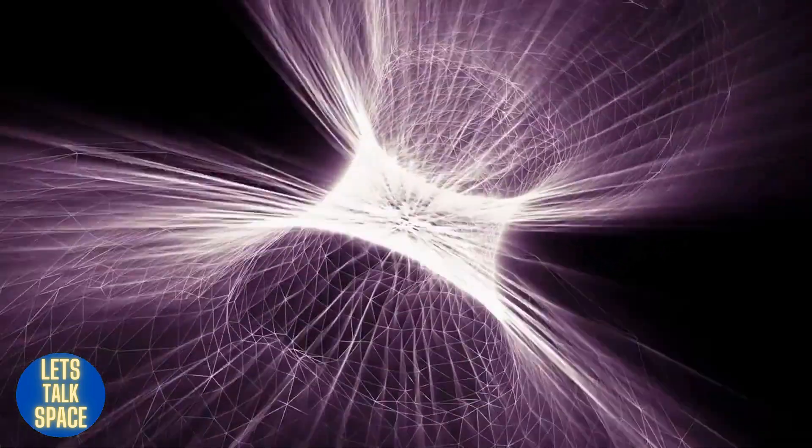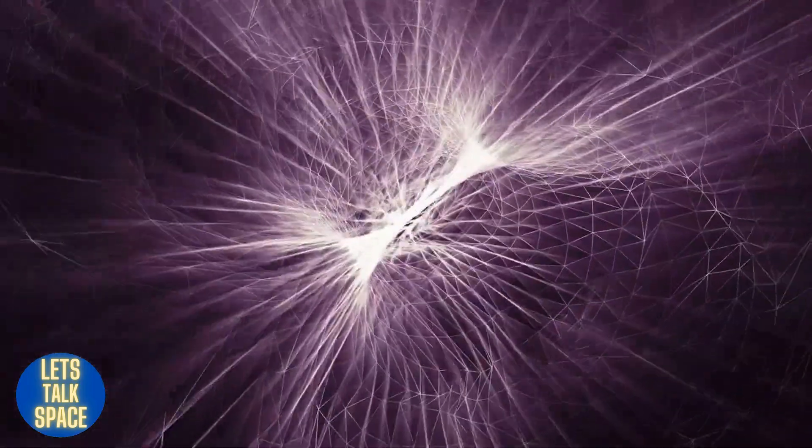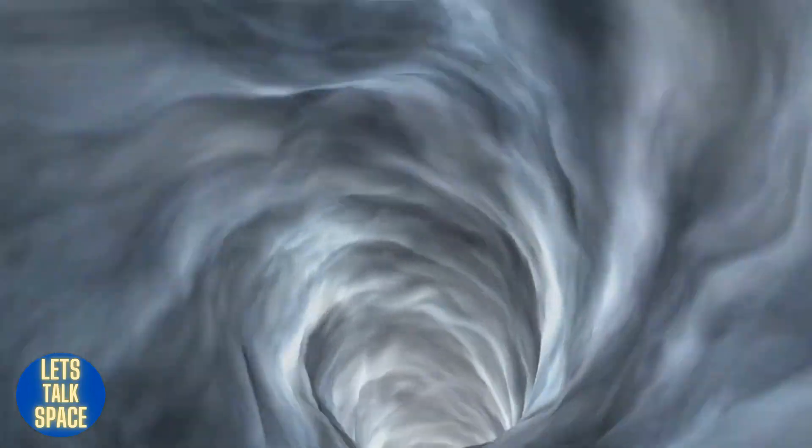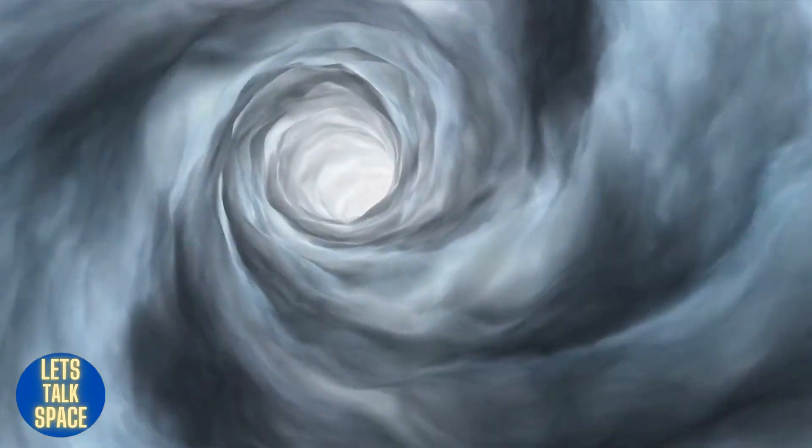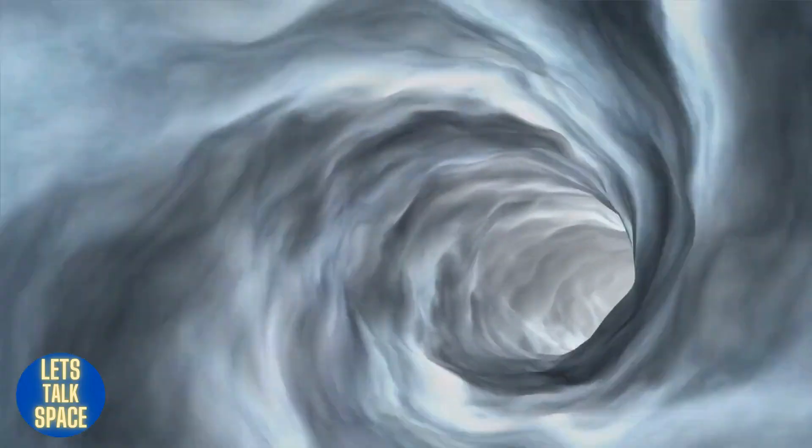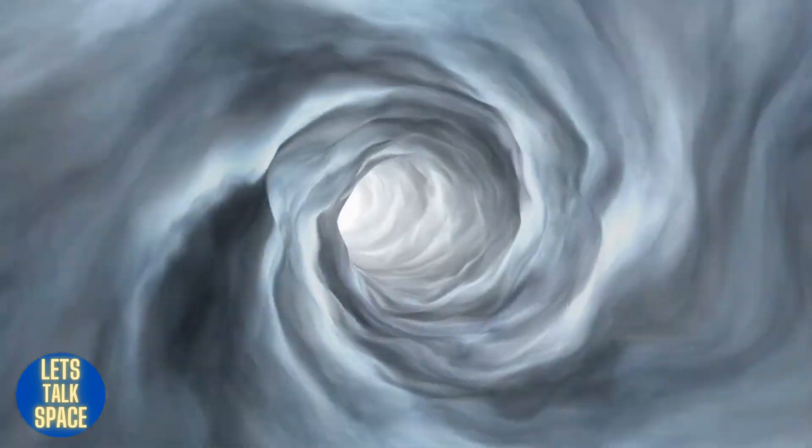A wormhole is a type of tunnel in space time, which connects two different points in space time. A wormhole is an extremely thin and elongated tunnel with two open ends, one at each end of the wormhole and relative to the observer.